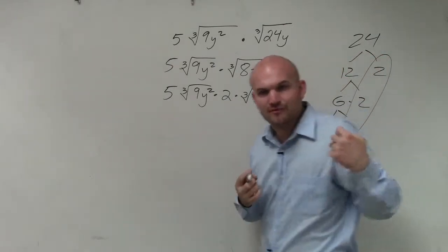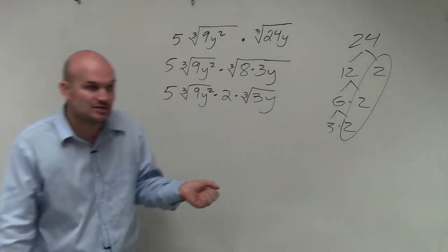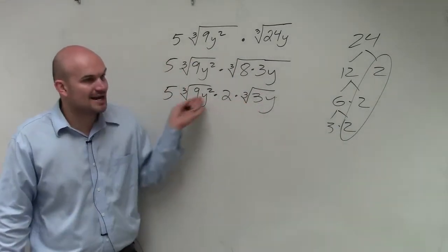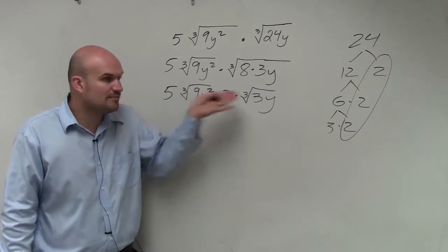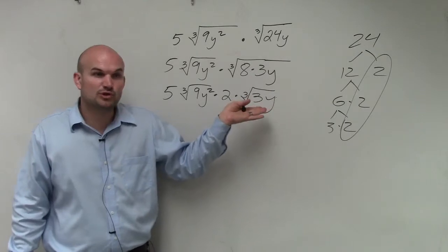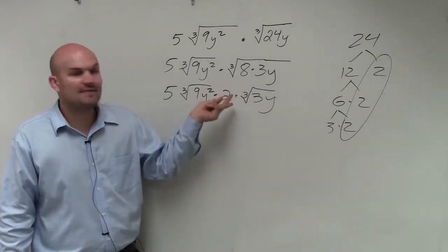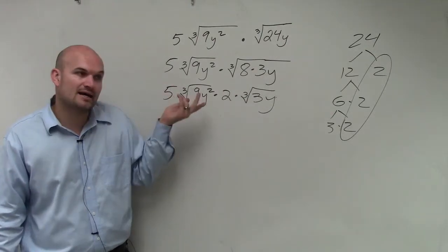Now, if you guys remember from our notes what we talked about, when you are multiplying radical expressions, it doesn't matter what's in the radicand. You can multiply them as long as the index is the same. So these are both the cube root. So we can multiply 9y² times 3y. And then the numbers outside the radicand, I can multiply as well.